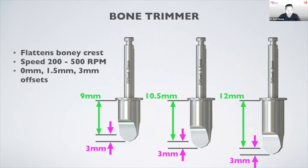The next drill is the bone flattening drill — there are three different ones for different offsets. The standard zero offset is a nine millimeter cutting depth. A 1.5 millimeter offset increases depth to 10.5 millimeters, and a three millimeter offset gives 12 millimeters. The bone trimmer creates a concave ridge approximately three millimeters wide at the implant site. After the bone trimmer, you use the point drill.